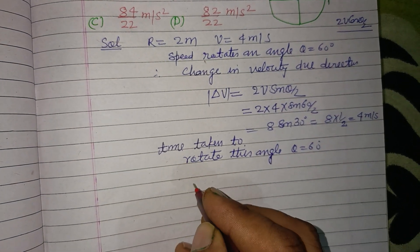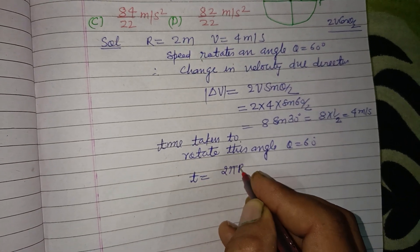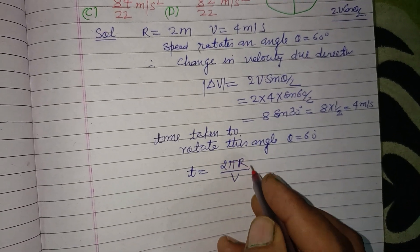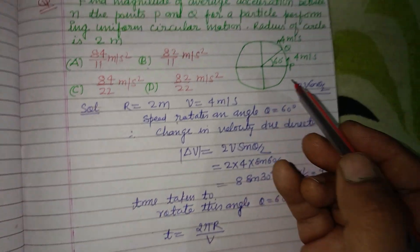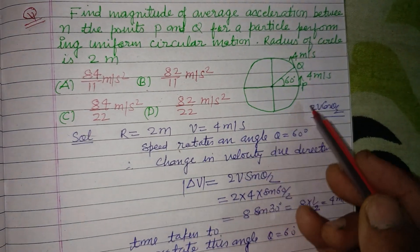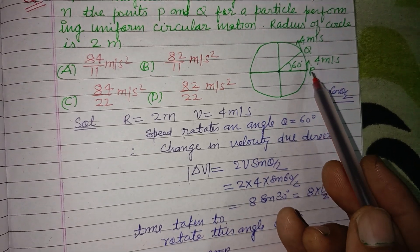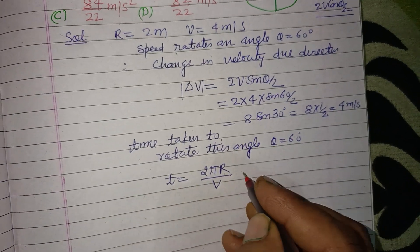So time equal to 2 pi R upon v. This is the total time or time of revolution, or we can say this is time period or time taken to cover one circumference 2 pi R upon v.